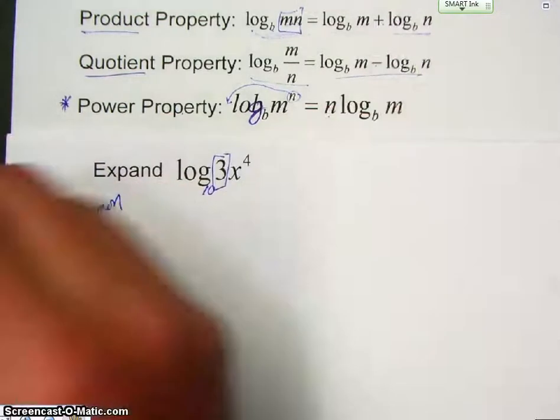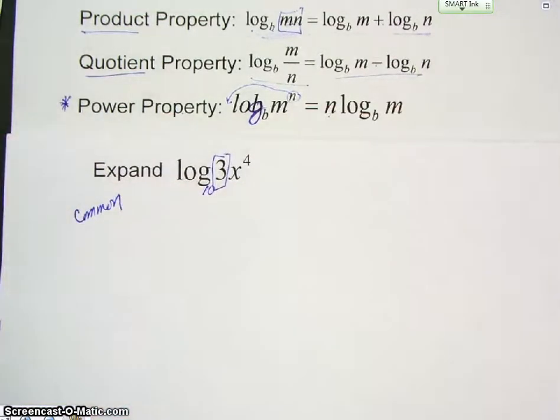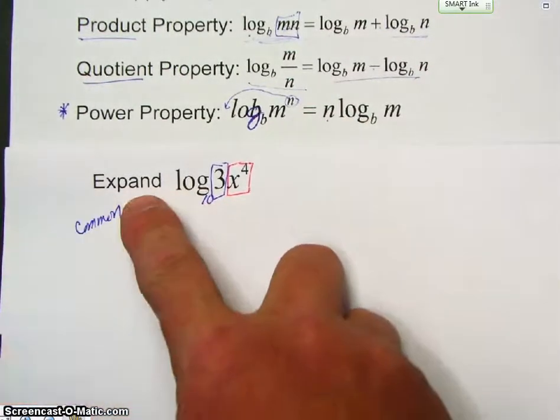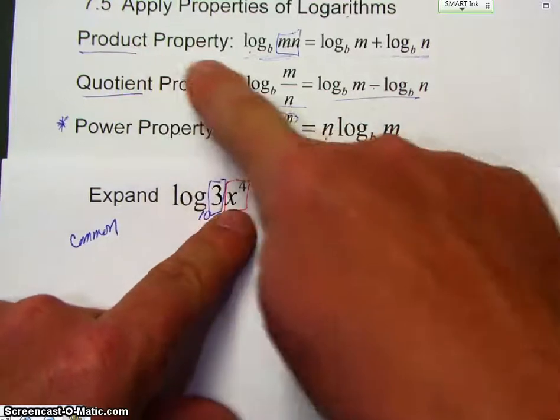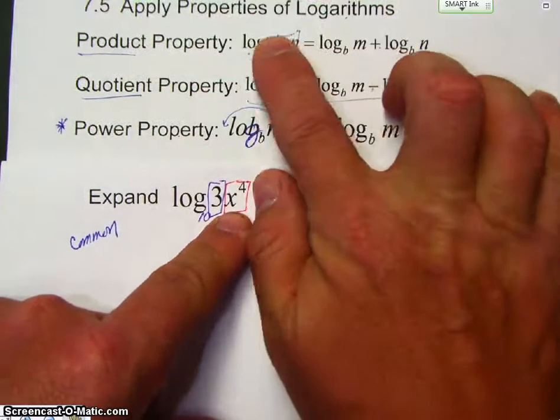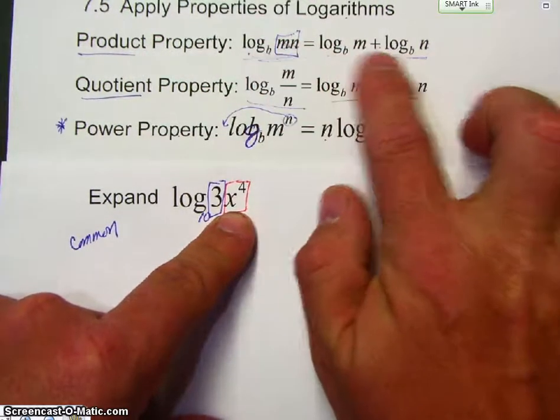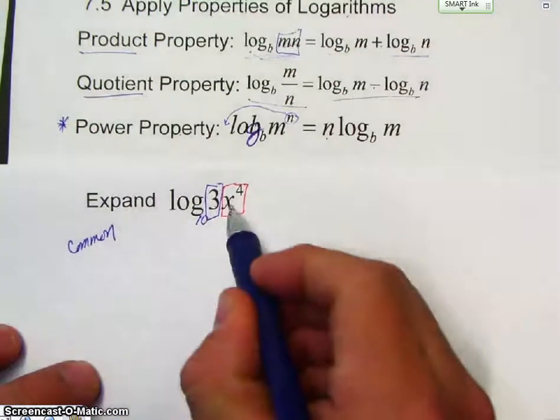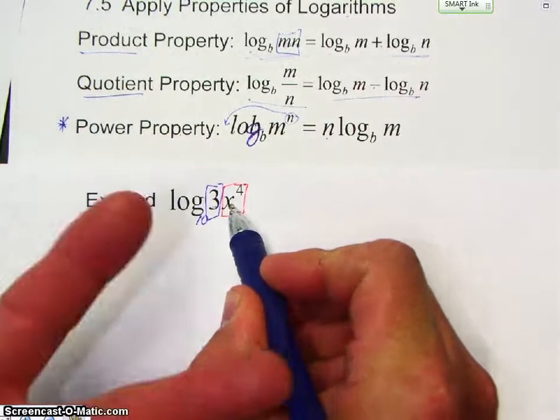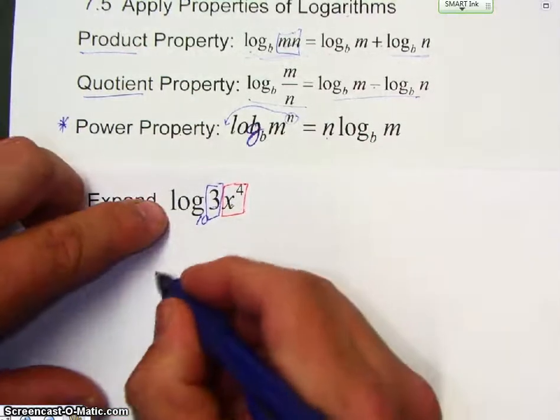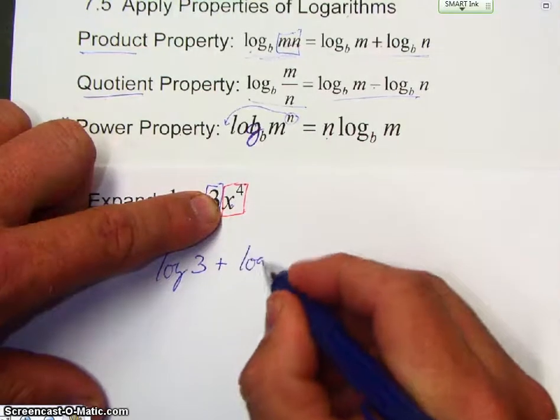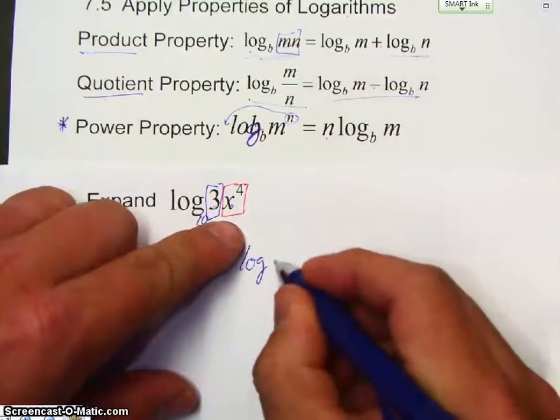We are going to expand. So, you have this times this. So, this is single logarithm, because there's only one word that says log. I'm going to expand it. Well, if this is a multiplication, I'm going to use the product property. So, I'm going to take the single logarithm, and I'm going to break it into multiple logs. Now, how many? Well, there's only two bases that are being multiplied, so that means I'm going to have two logs. So, I take log of 3 plus log of the other base, X to the 4th.